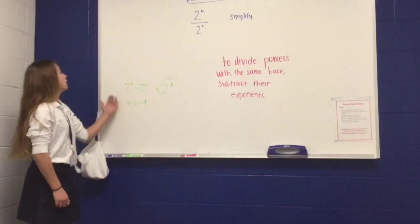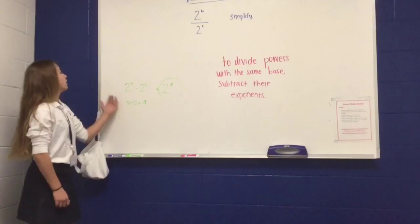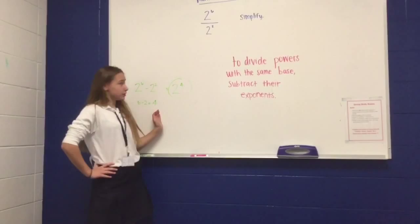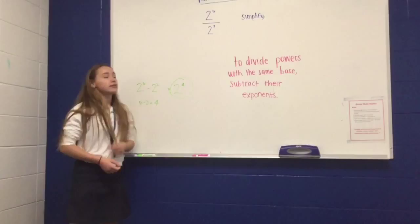You subtract these two exponents. We take six minus two and that gives us four. So our final product would be... no, okay. It would be like the final answer. The final answer would be, you keep the same base, it would be two to the fourth power.